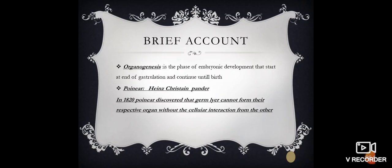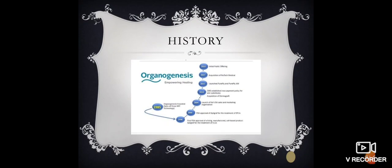Now, we can certainly talk about brief account. Here we discuss pioneer Hans Christian Pander. In 1820, pioneer discovered that germ layers cannot form their respective organs without cellular interaction from the others. Now I am going to talk about their history. The scientists talked about Organogenesis in 1985. The study on Organogenesis is completed in 2019. I'd like you to focus on this graph.